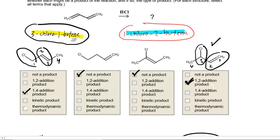And then as far as which one is kinetic and which one is thermodynamic, in a nutshell, the 1,2 addition product is always going to be your kinetic product. And then the 1,4 addition product is going to be your thermodynamic product. So that would be the correct answer to the question.